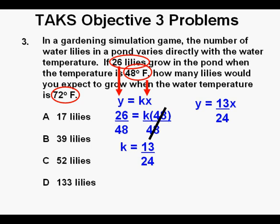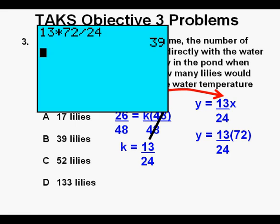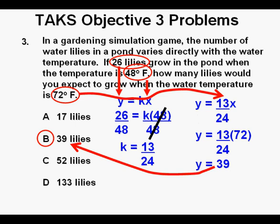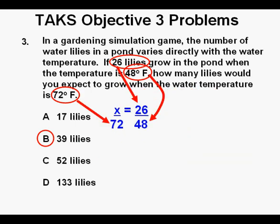So now, with that constant of variation calculated, we have the direct variation equation y = 13/24 × x. Now we can take the 72 and put it in for x, and that gives us 13/24 times 72, and here it is multiplied out of the calculator, and calculated out y = 39, which is our answer B. Alternatively, this problem, since we know it's a direct variation, can be set up as a proportion: x/72 = 26/48. We would get the right answer, 39 lilies, in this manner as well.